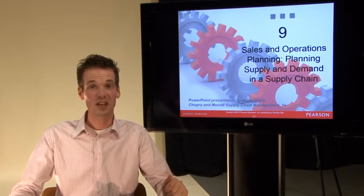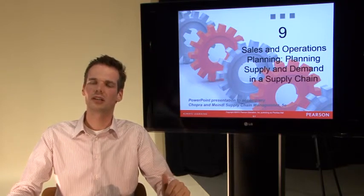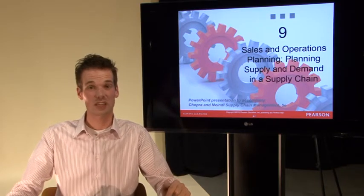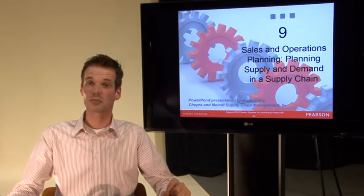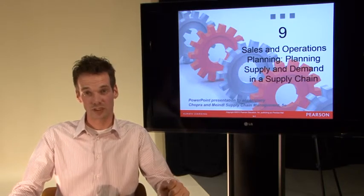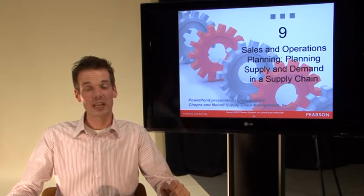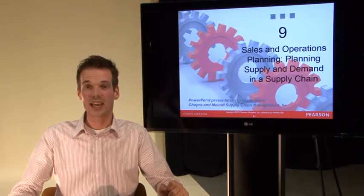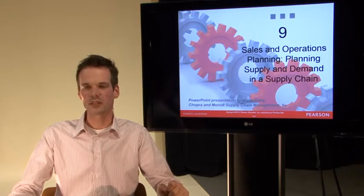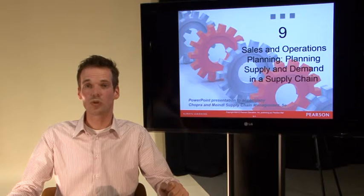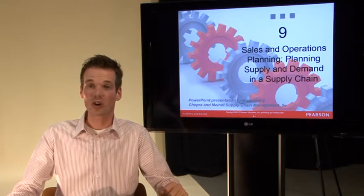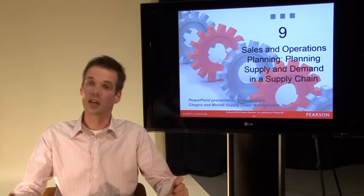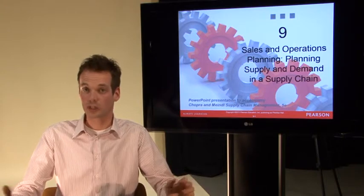In Chapter 7 we came up with the forecast. So first we produced a forecast in Chapter 7, then based on that forecast we produced an aggregate plan in Chapter 8. Now in Chapter 9 we will finalize that plan and come up with the final plan to forecast demand in the whole supply chain based on the final consumer.